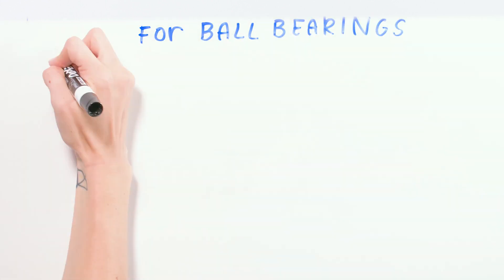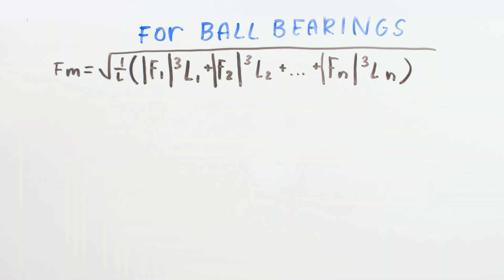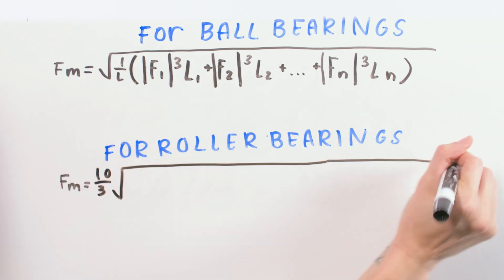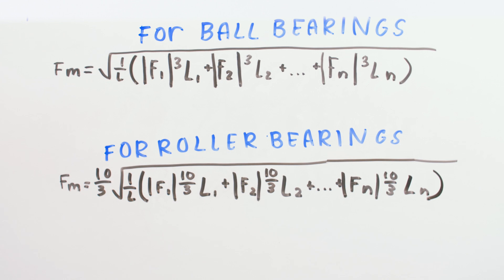Finding the mean equivalent dynamic load is relatively simple, even though the equation may look intimidating. You simply take into account each discrete loading phase and the percentage of the total travel that each load is applied over the course of the move cycle. Each discrete load is multiplied by the distance traveled while that load is applied. Then the entire equation is divided by the total travel.